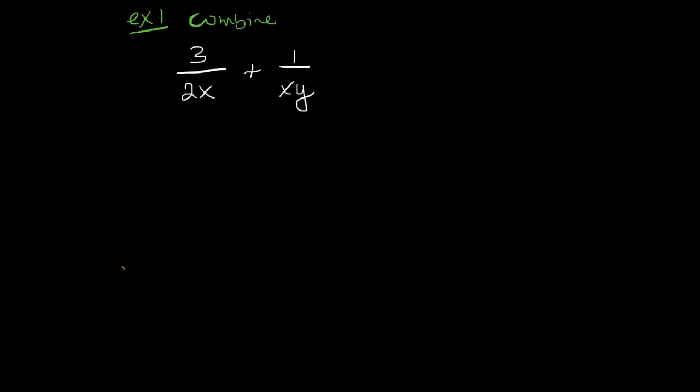So notice that they both already had x as a factor. This one has 2 as a factor, this one's going to need that 2 as a factor, and this is the y, this one's going to need the y. So I am going to multiply the first fraction by y over y, and the second fraction by 2 over 2. And that will create 3y over 2xy, and 2 over 2xy.